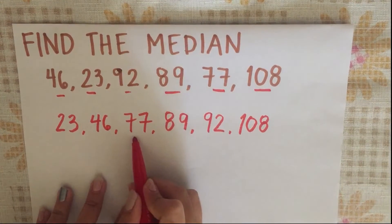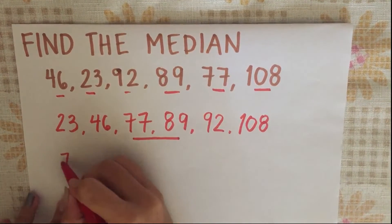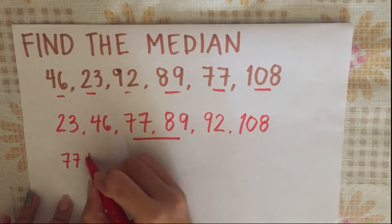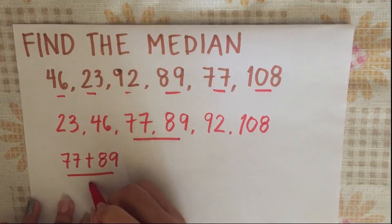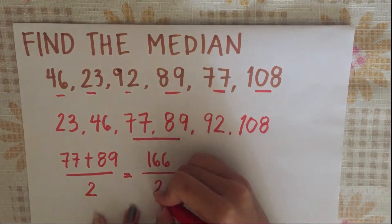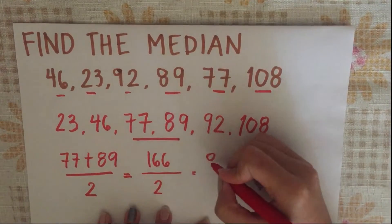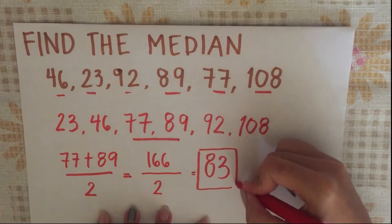Since the total number of the data given is even, we will get the two middle terms and divide it by 2. The two middle terms, 77 and 89, add to 166, and divided by 2, it will become 83. Therefore, our median is 83.